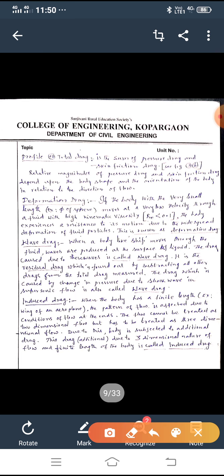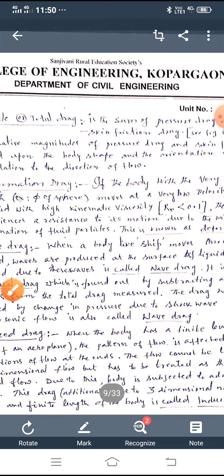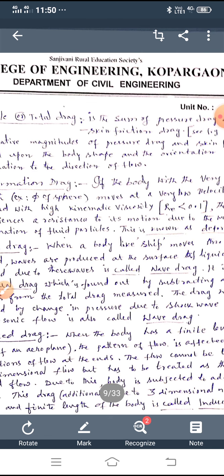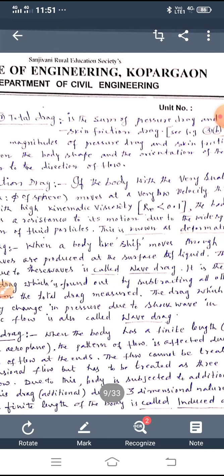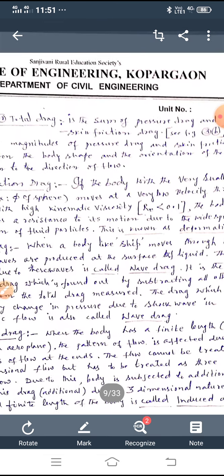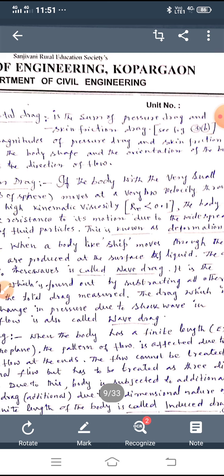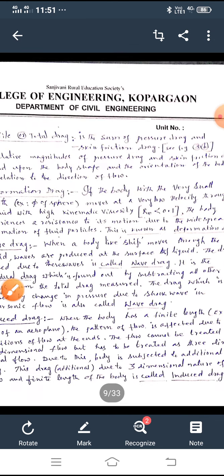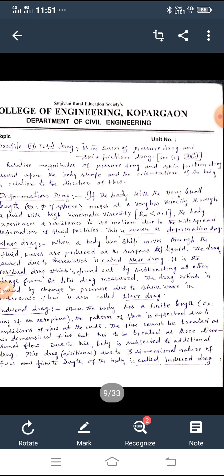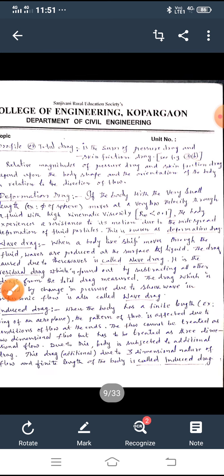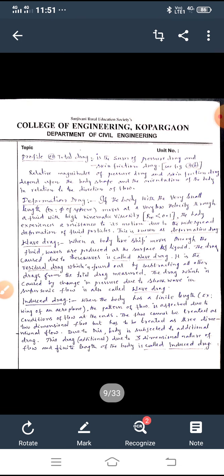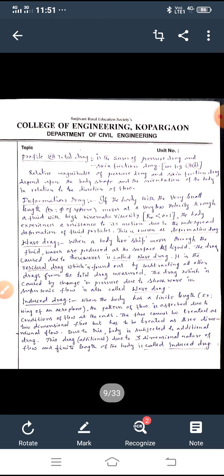Next, come to wave drag. Wave drag is nothing but when a body like ship moves through the fluid, waves are produced at the surface of the liquid. The drag caused due to these waves is called wave drag. It is also known as residual drag, which is found out by subtracting all other drags from the total drag measured. The drag which is caused by change in pressure due to shock wave in supersonic flow is also called as wave drag.